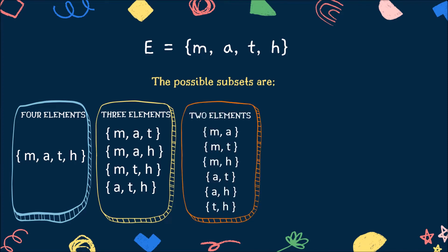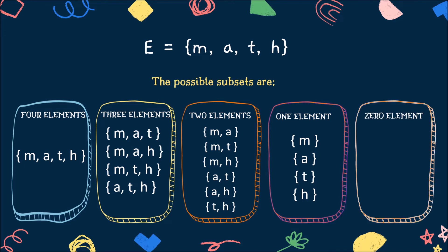For two elements, the subsets are ma, mt, mh, subset at, ah, and subset at. For one element, the subsets are subset m, subset a, t, and subset h. For zero element, the subset is a null set. So, therefore, there are 16 subsets found in the given set E.